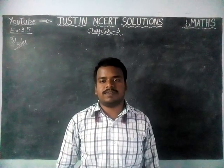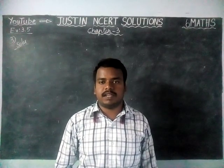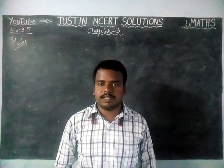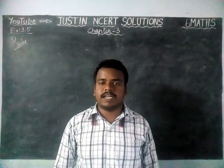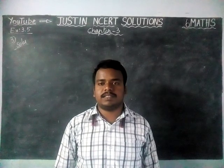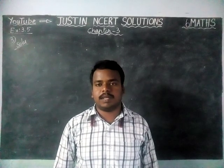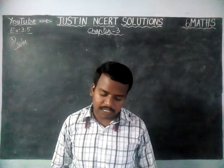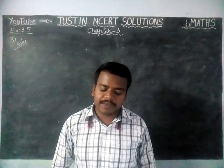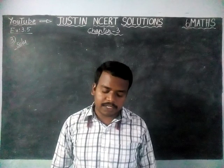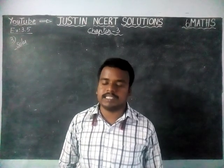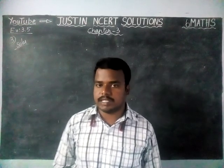Hi students, welcome to Justin's NCRD Solutions. In this video, we are going to see Class 6 Maths Chapter 3 Exercise 3.5, 3rd Question. The question is: which factors are not included in the prime factorization of a composite number?